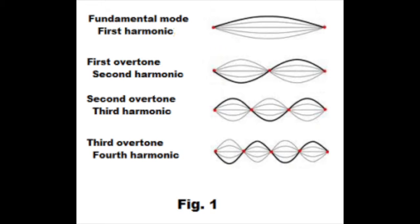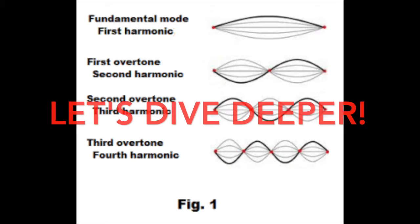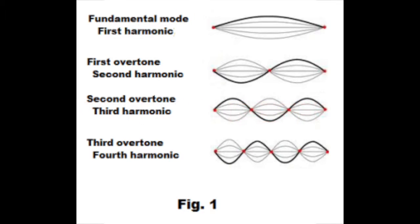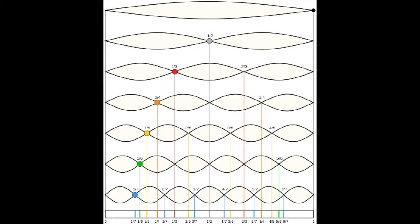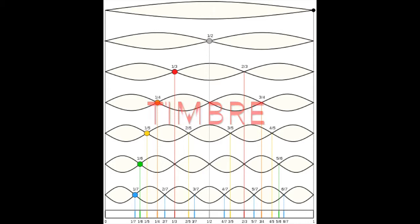Armed with these basic concepts, let's dive a little deeper. Now that we have an understanding of vibration and resonance, let's touch on timbre. Also known as tone color, timbre is the general and overall quality of a sound.